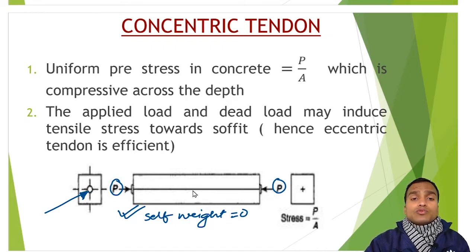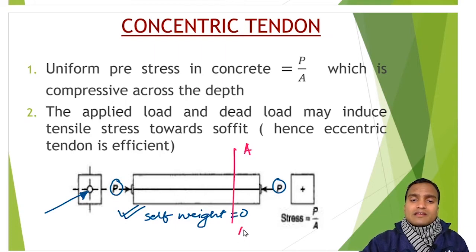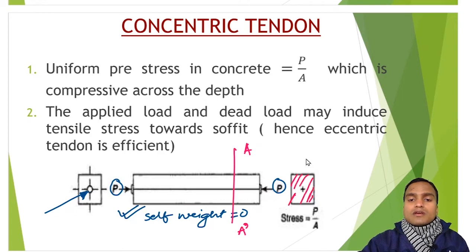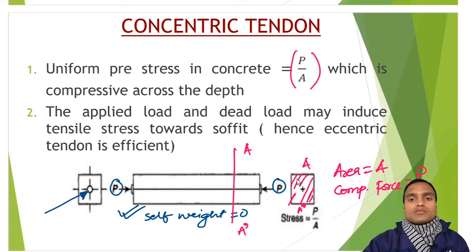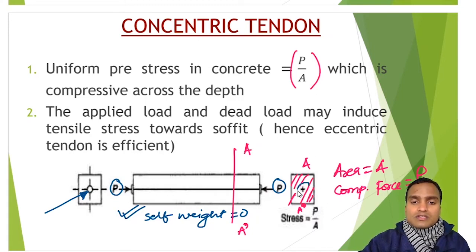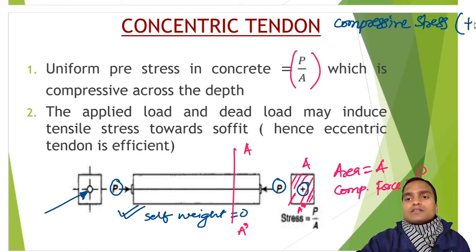The tendon passes exactly through the centroid of the section — that is why it is concentric PSC. Due to this, there is uniform prestress developing in the concrete at any section, say A-A'. The cross-sectional area is A, the compressive force is P, so the stress = P/A, uniformly distributed throughout the cross-sectional area. This stress is compressive in nature, and in this subject a plus sign is used as the notation for compressive stress.